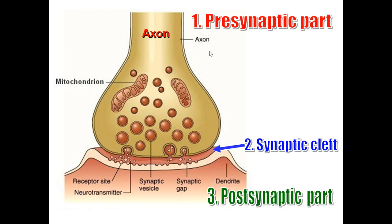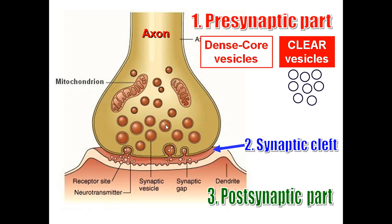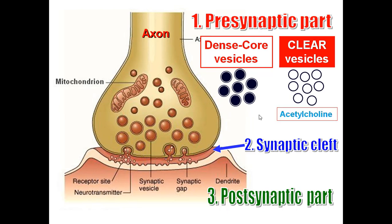The pre-synaptic part contains synaptic vesicles of two types: clear vesicles, which usually contain acetylcholine, and dense core vesicles, which usually contain catecholamines like norepinephrine.